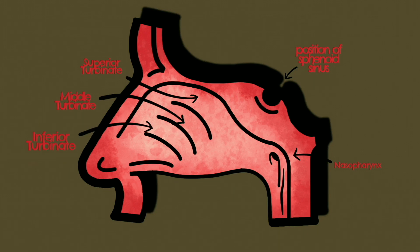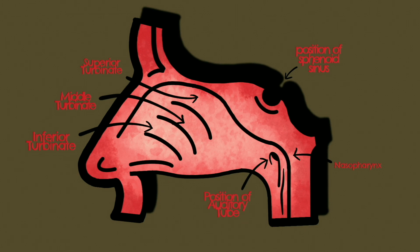The inferior turbinate is the largest. At the posterior lateral aspect of the nasal cavity we can see the entrance to the auditory tube. This tube links the nasopharynx to the middle ear. If this tube is to become occluded, the patient would suffer from otitis media, which is inflammation of the middle ear.